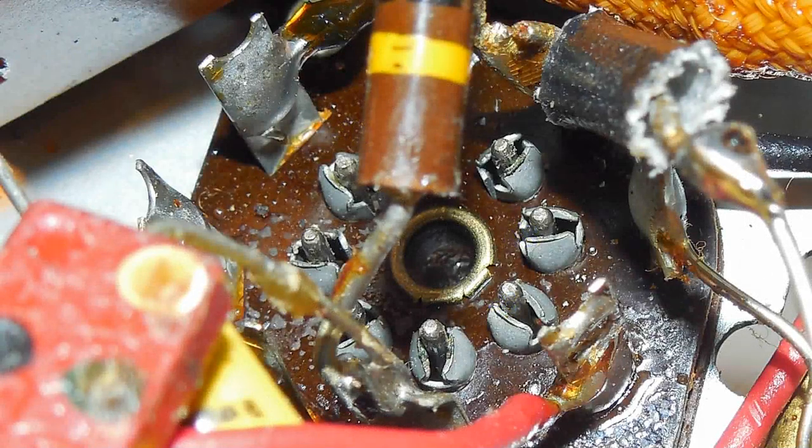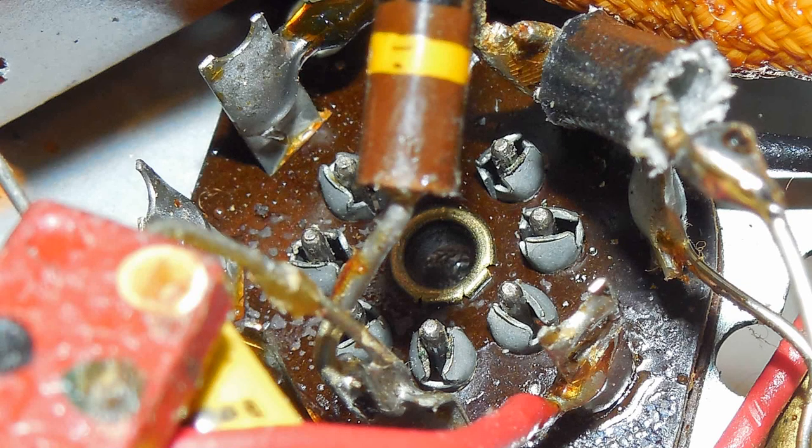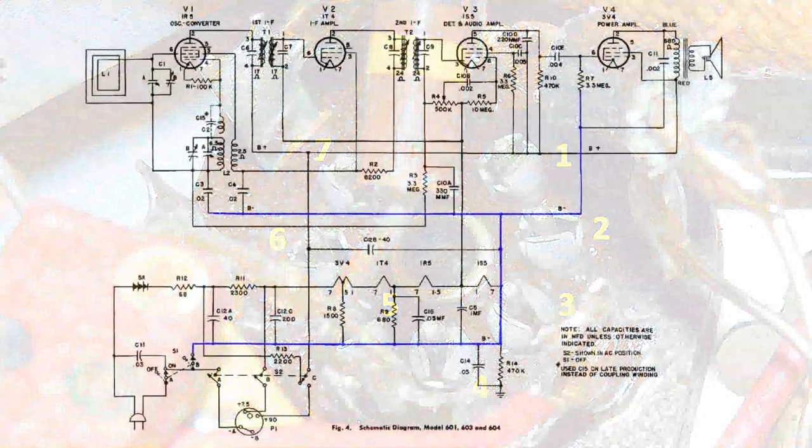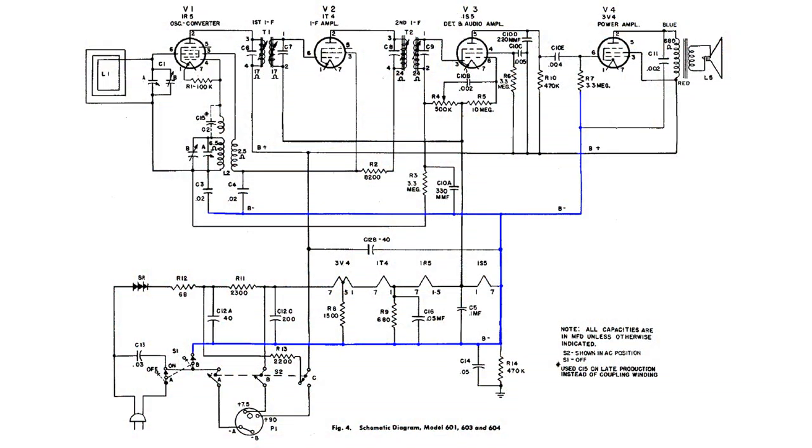This is an enlargement of that tube socket from underneath the chassis. And this is how the pins count. In this diagram I have highlighted the common ground in blue, and I'm going to hook the negative lead of my voltmeter to the negative side of one of the 40 microfarad capacitors.